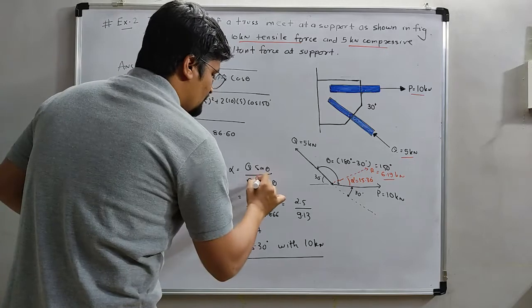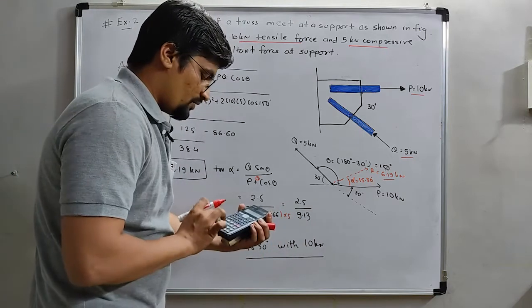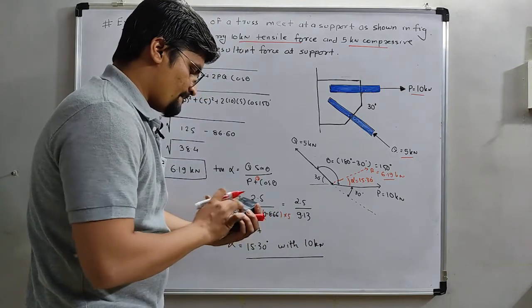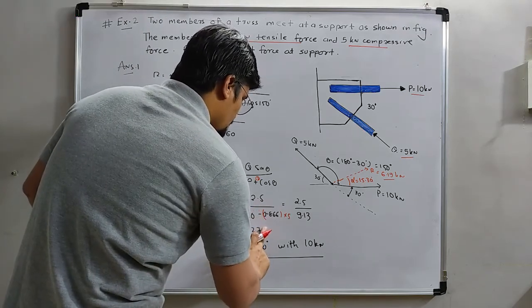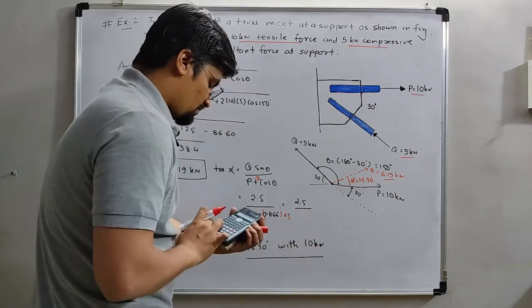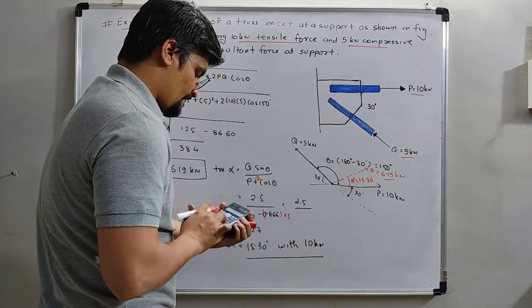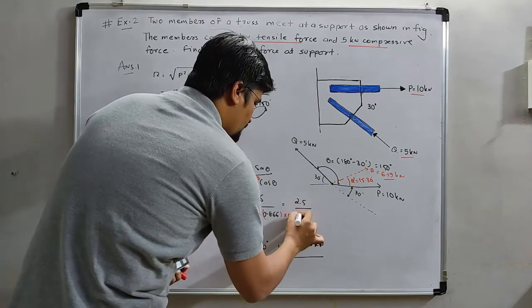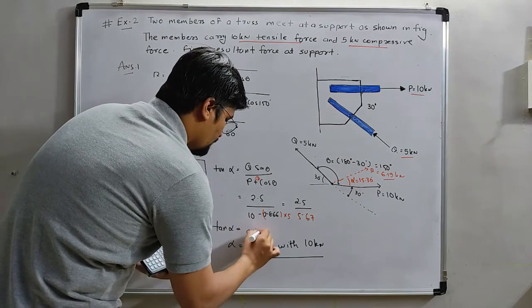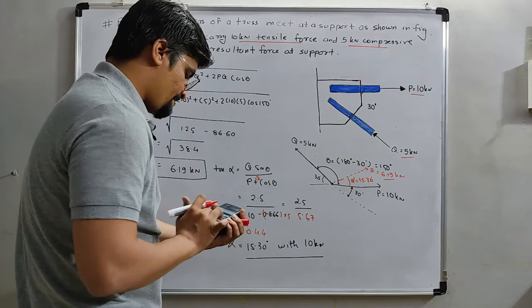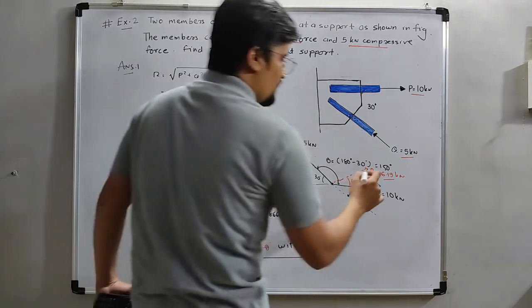So it will be multiplied by 5. Cos 150 into 5 means minus... 10 minus answer is equal to 5.67. And tan alpha is equal to 2.5 divided by answer is 0.44. So the alpha will be 23.79.